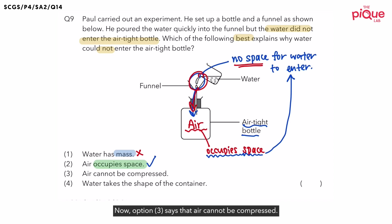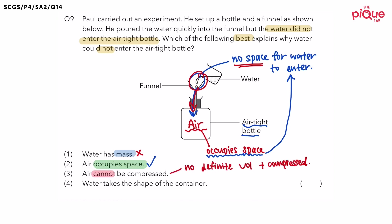Now, option three says that air cannot be compressed. Is this statement correct? Think about it. What is air? Air is a gas. Now, do gases have definite volume? No, gases do not have definite volume. So if gases do not have definite volume, can gases be compressed? Yes, gases can be compressed. So with that, let's quickly write down the annotation first. So with that, the third statement is actually wrong because air can be compressed.